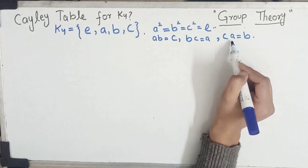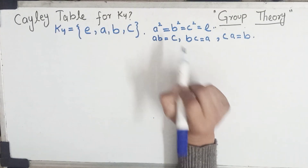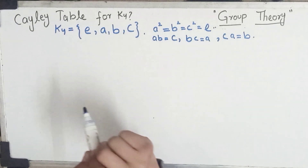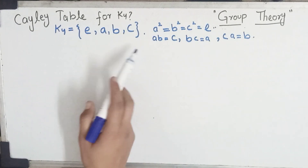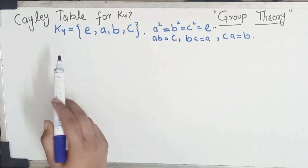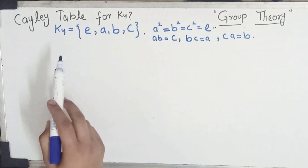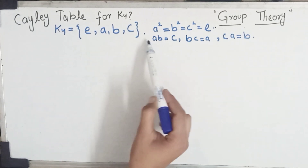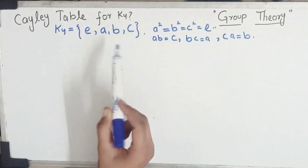Commutative property holds in K4. If b·a, then that is also equal to c, and a·b is also equal to c. In the previous lecture we discussed quaternions, where i·j and j·i were not equal. But in this case, in K4, a·b and b·a have the same meaning — they are equal.